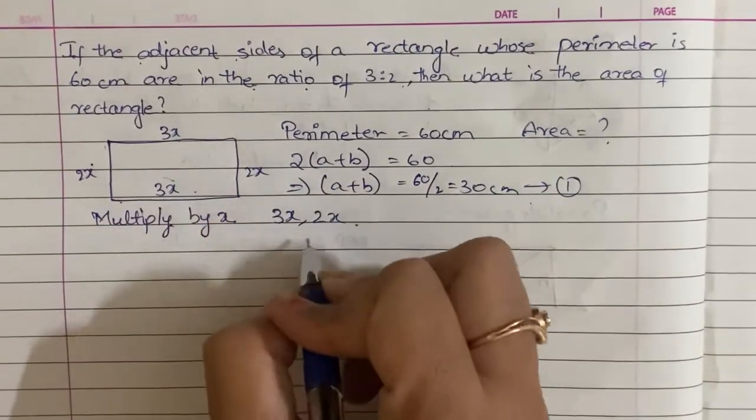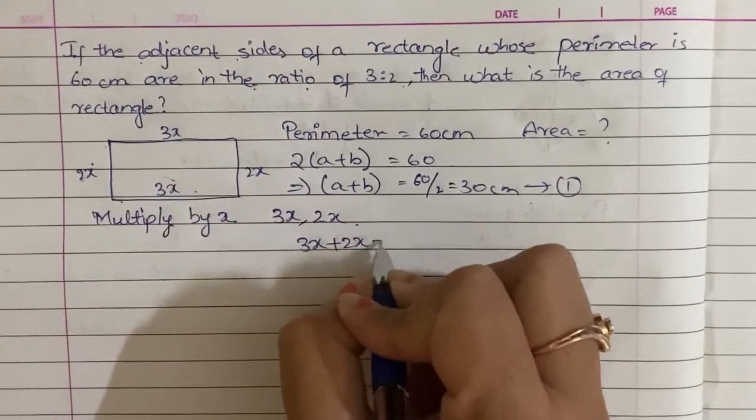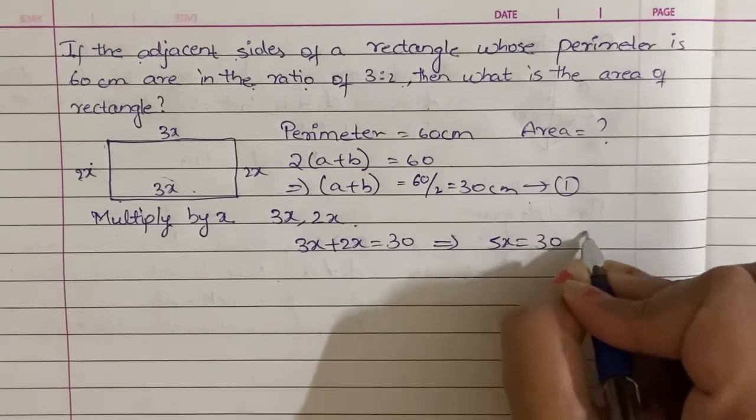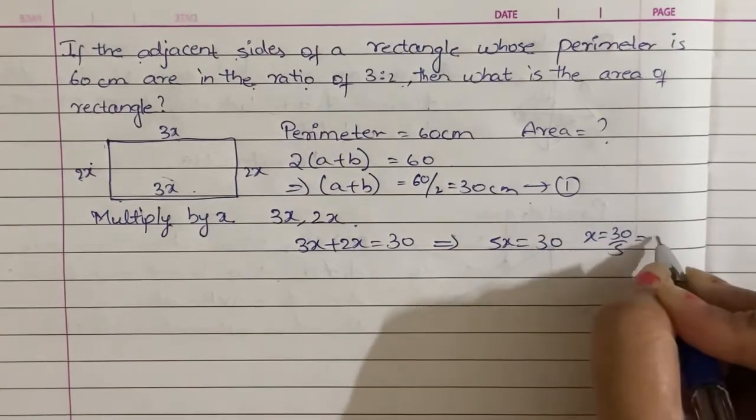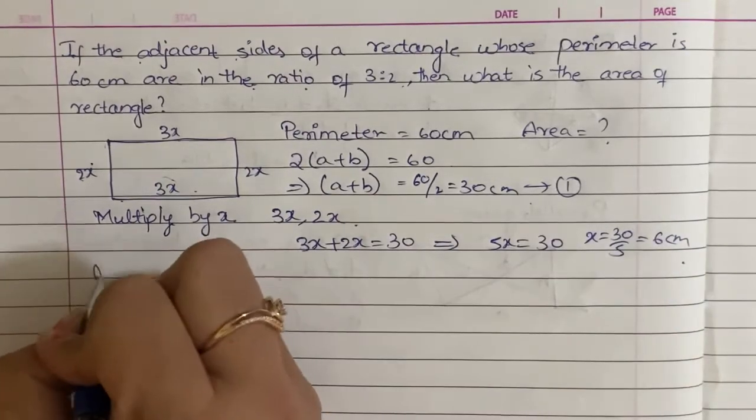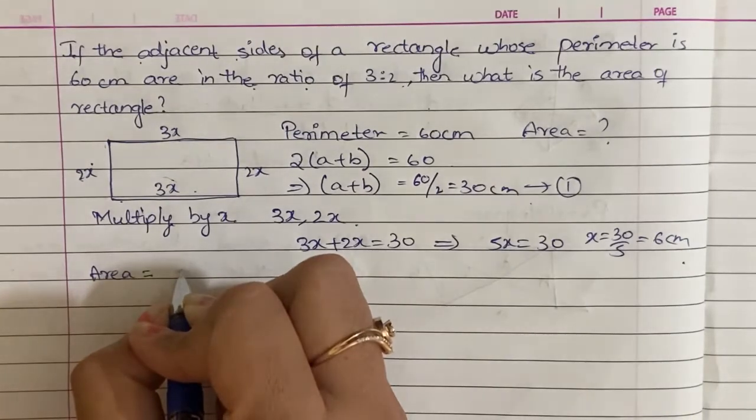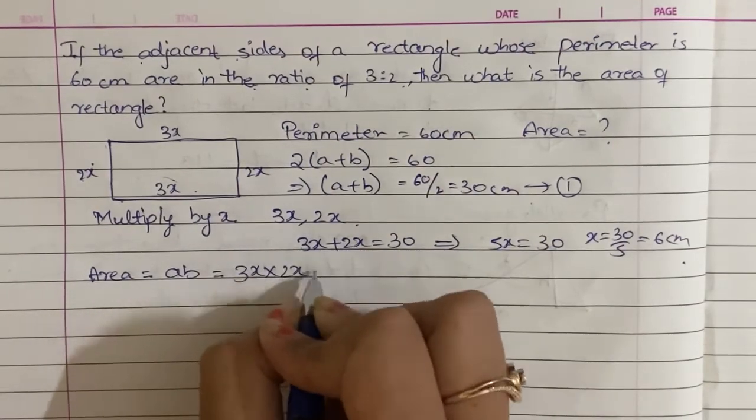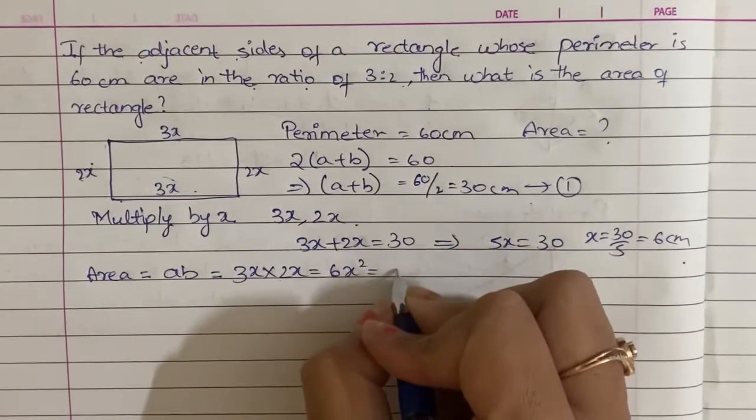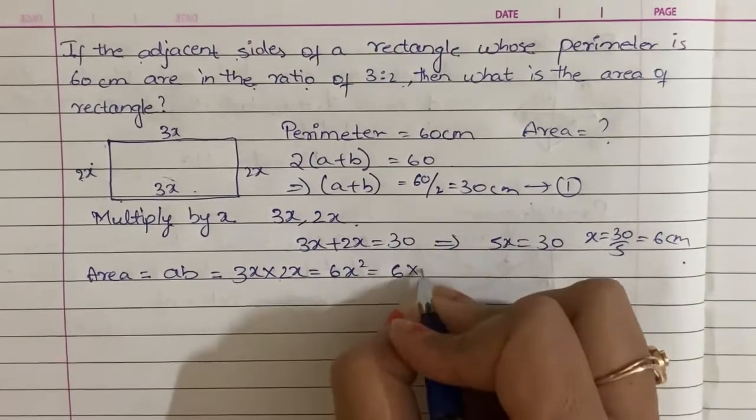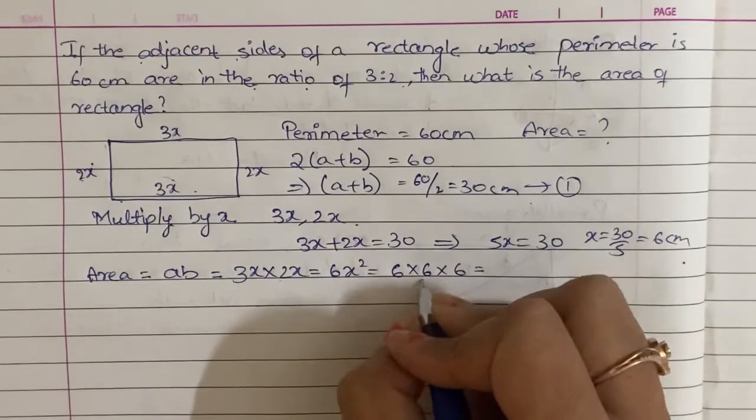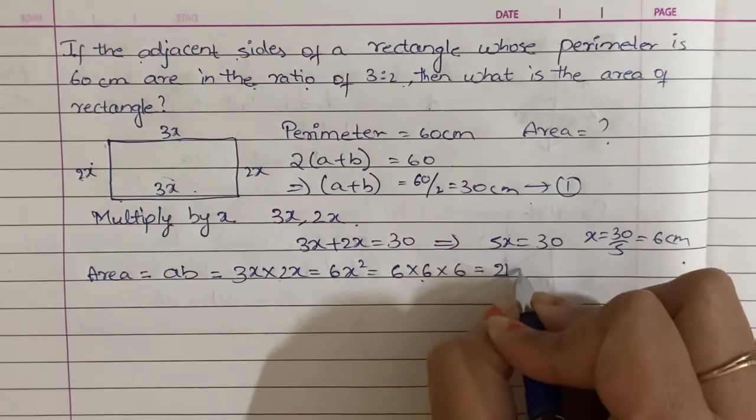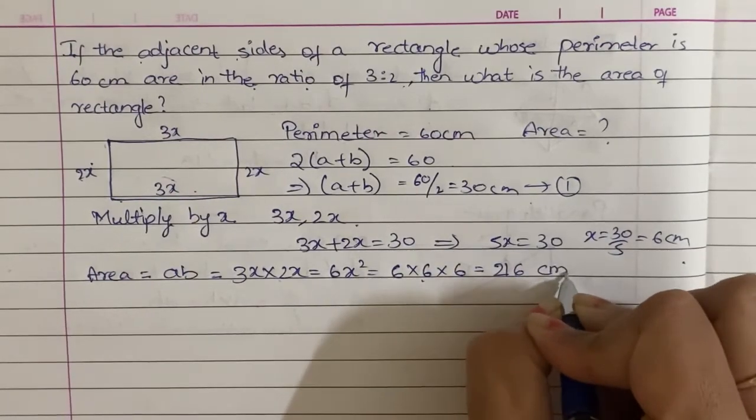2x is equal to 30, which implies 3 plus 2, 5x is equal to 30, and x is equal to 30 by 5. So x is equal to 6 centimeters. Now area of the rectangle is equal to A into B, that is equal to 3x into 2x, 6x square. 6 into 6 into 6, that is 36 into 6, which equals 216 centimeter square.